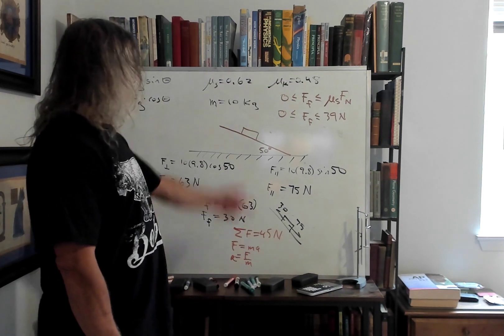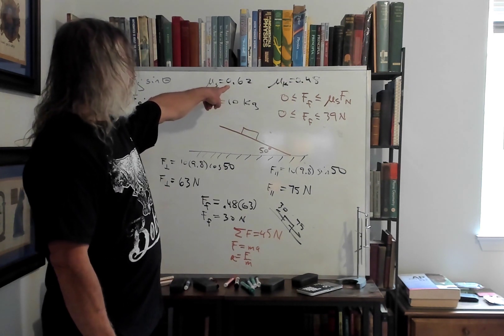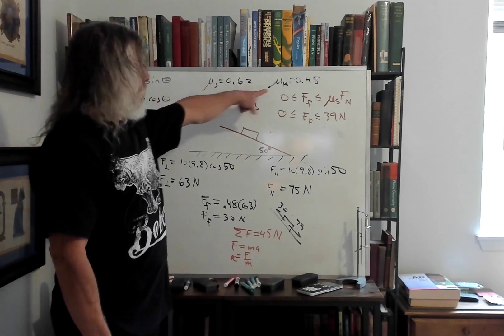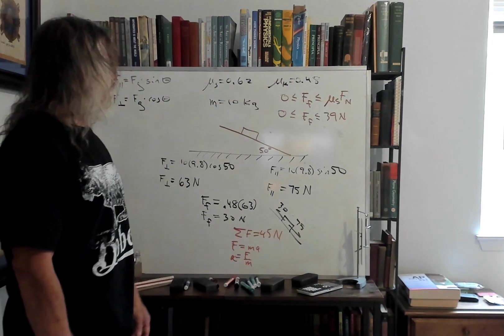These are coefficients of friction, coefficient static and coefficient kinetic. We're saying the mass of the oak block is 10 kilograms.